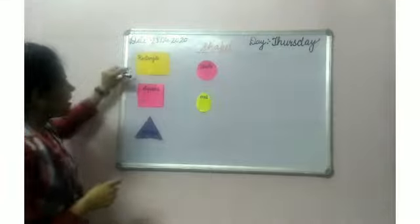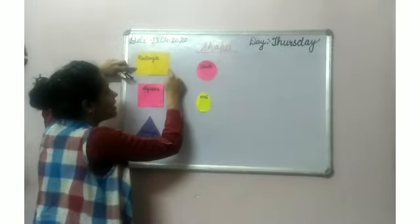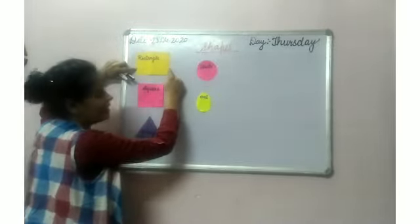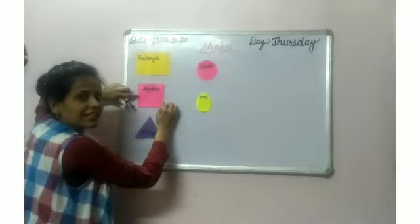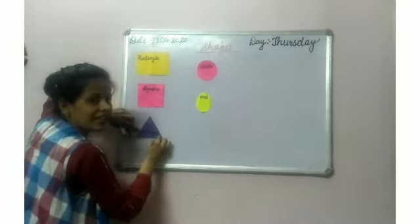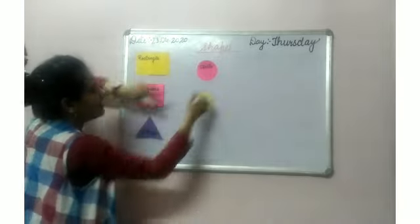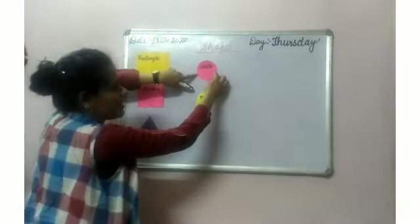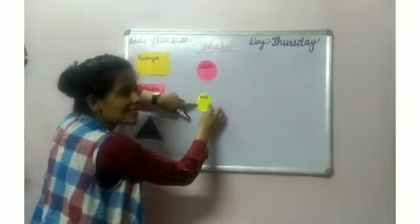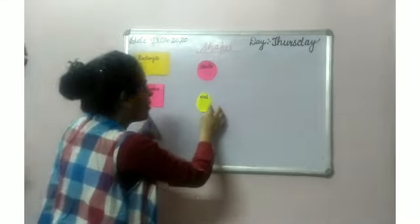I am repeating again. What is this? This is rectangle. This is square. This is triangle. This is circle. And this is oval.